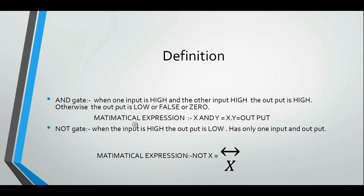The NOT gate is a negation — it is an inverse. When the input is high, the output is low. The NOT gate has only one input and one output. The mathematical expression of the NOT gate is X-bar, written as NOT X.